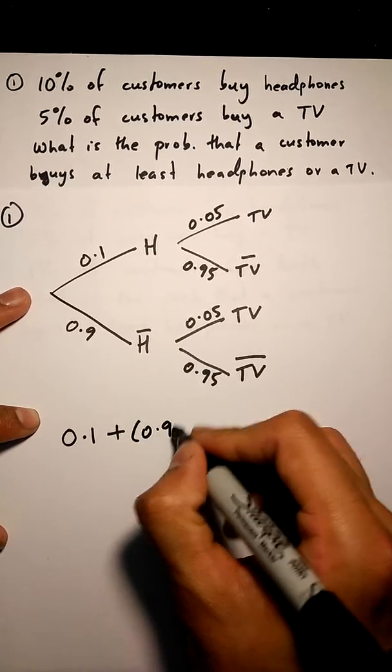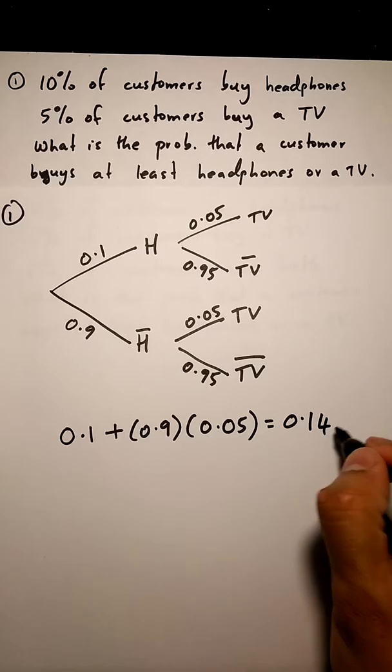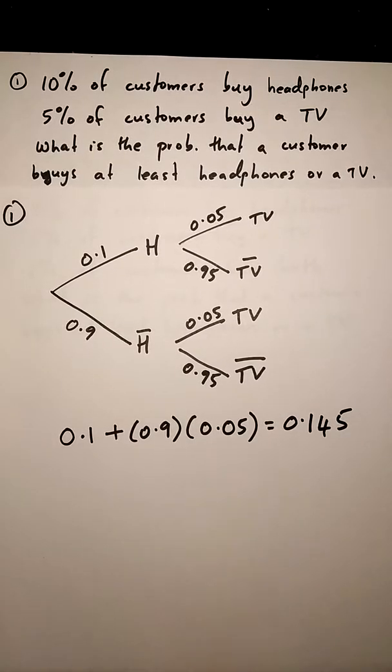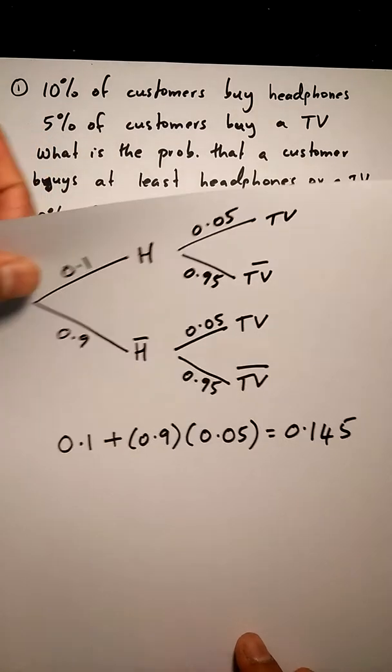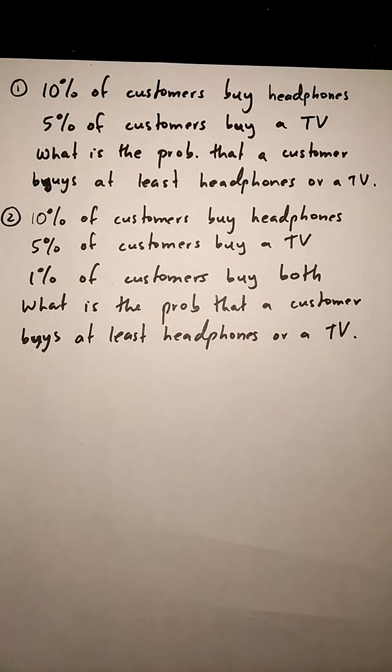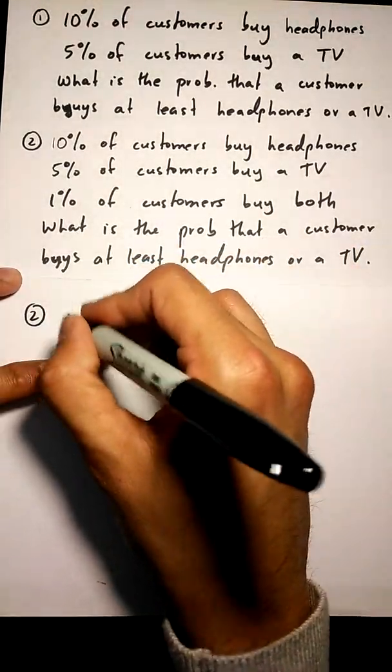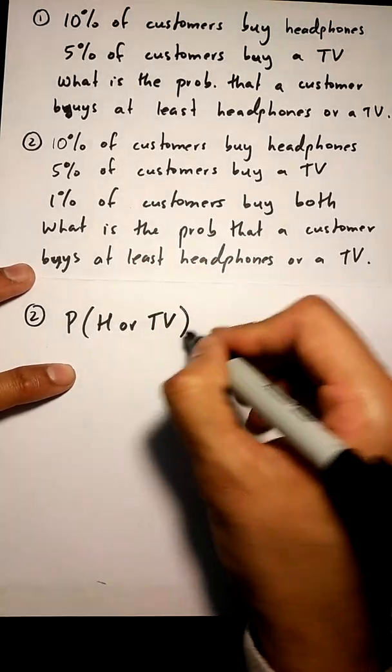Because we need a customer that buys at least headphones or TV, we know that the probability of a customer buying a TV is 0.05. 0.95 again. We don't buy headphones, but buy a TV, that's good. We write that down. It's going to be 0.9 times 0.05.